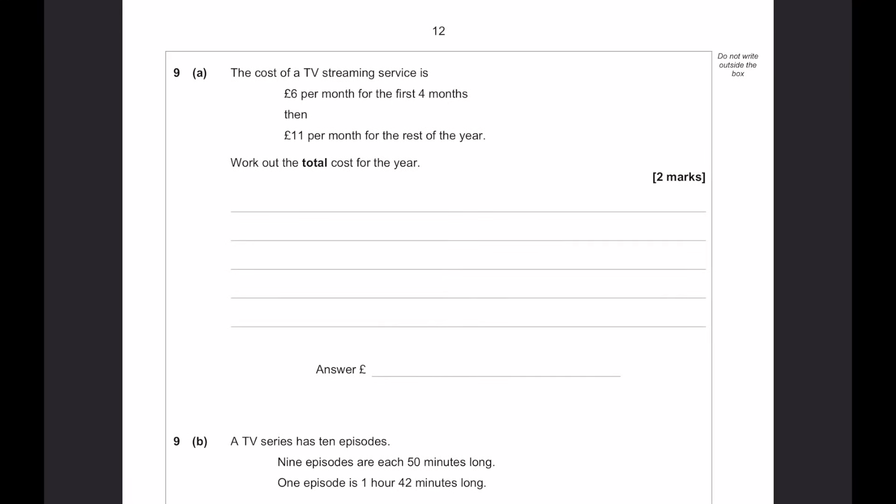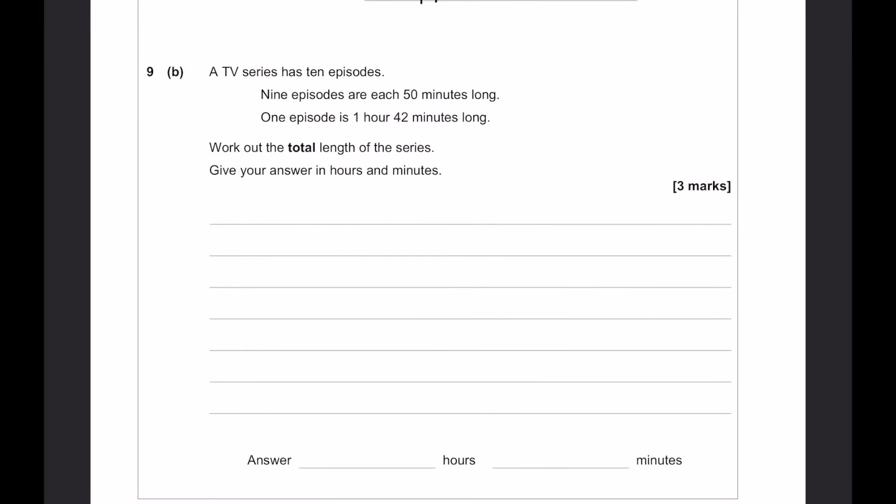What is the smallest possible number of people who use social media? So, because this is a calculator paper, we could first of all just put in 0.68 times 93. And that will work out what the 68% or 0.68 is in this case. That answer gives me 63.24. So, the smallest possible number, because it has to be greater than that, would be 64 people. The cost of a TV streaming service is £6 per month for the first four months, £11 per month for the rest of the year. So, we've got 6 times 4, which is £24 for, say, January to April. And then for the rest of the year, we have another 8 months. So, 8 times 11 is going to be 88. Adding those two together is going to be £112.